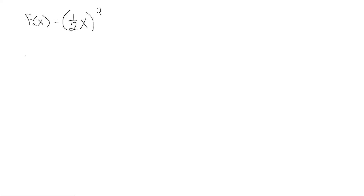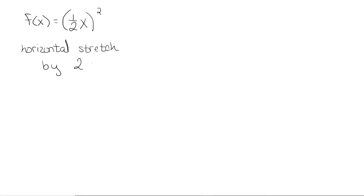Let's look at f of x equal to one half x squared. Once again, the one half is with the x, so that tells me it's going to be horizontal. Since I'm multiplying by one half, and one half is smaller than 1, we're going to horizontally stretch the graph, in this case by a factor of 2.